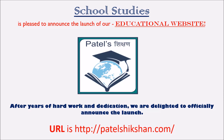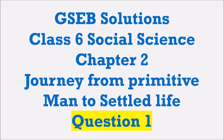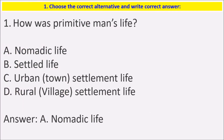Today we will see a video related to GACP solutions for Class 6 Social Science, Chapter 2: Journey from Primitive Man to Settled Life. Let's solve Question 1.